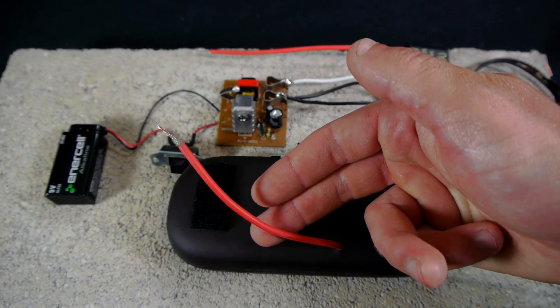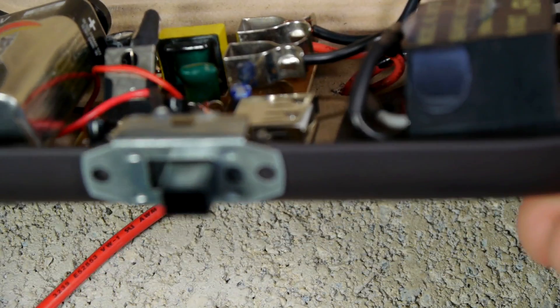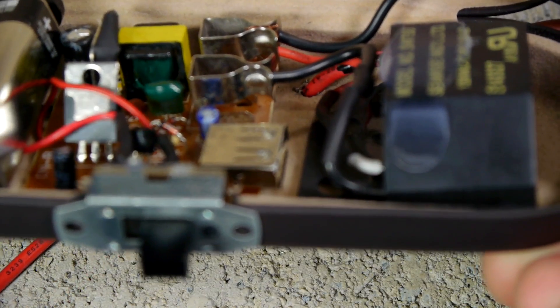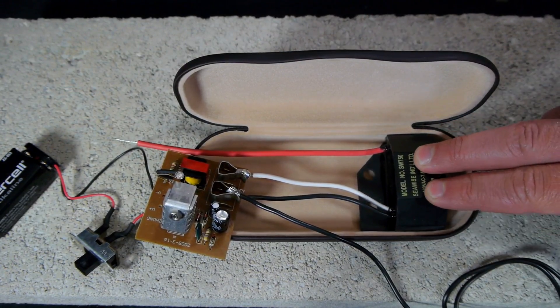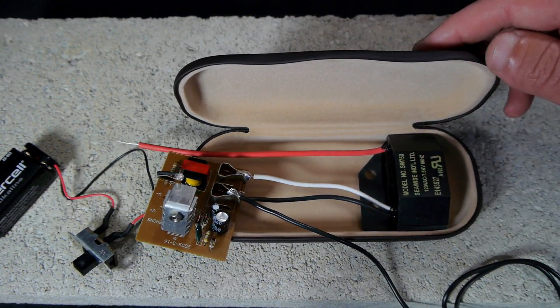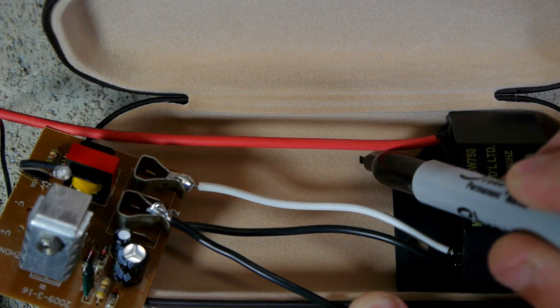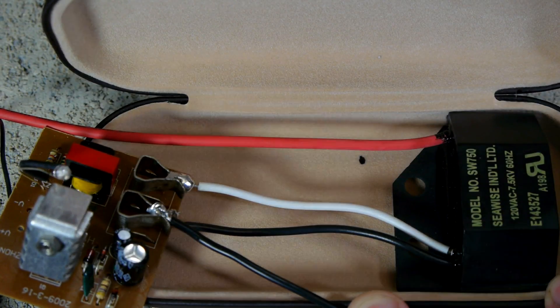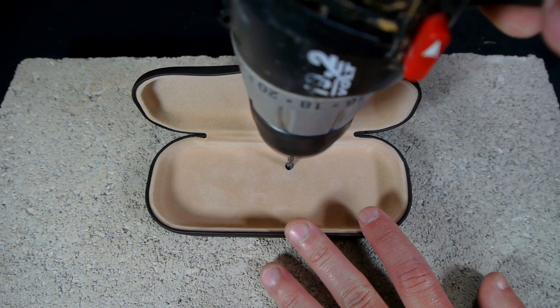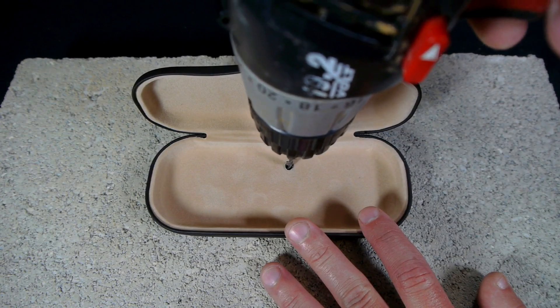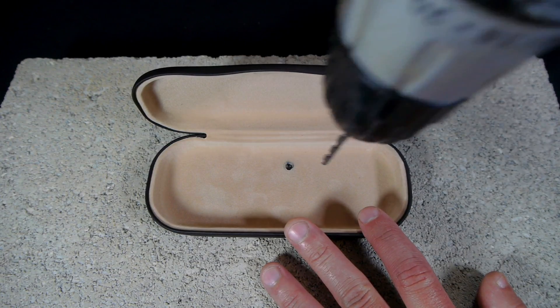The first will be to drill a hole for the wire coming off of our ion generator to extend through. We can find where the hole should be drilled by placing the ion generator into the glasses case and sliding it all the way to one side. A mark is then made in the case just slightly in front of where the red wire comes out of the generator. The hole drilled should be just barely large enough that the red wire can slide through without getting pinched.